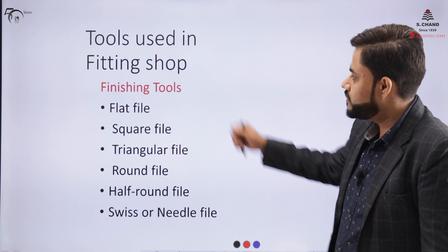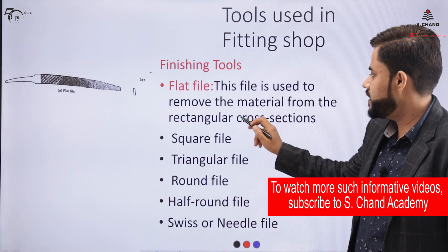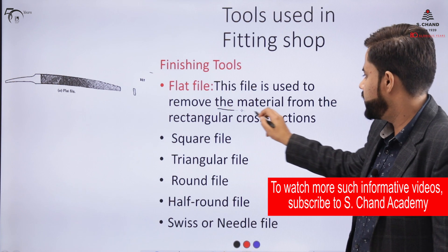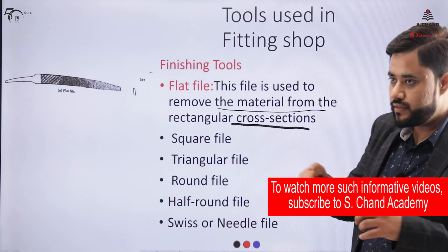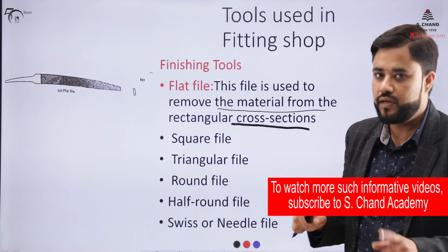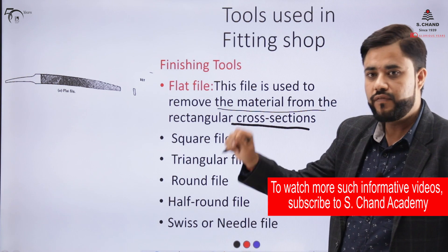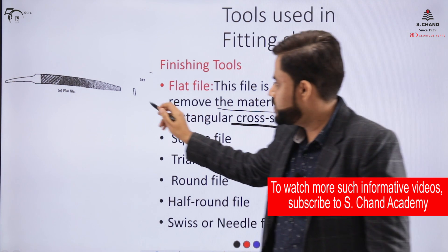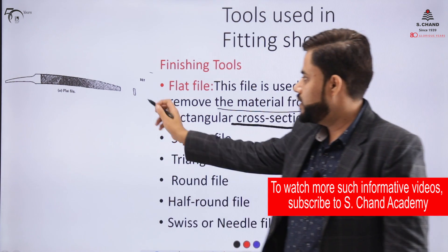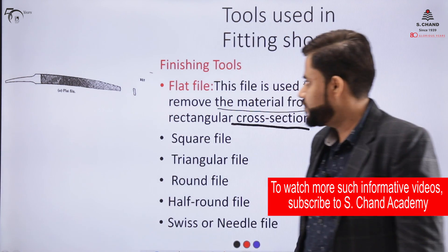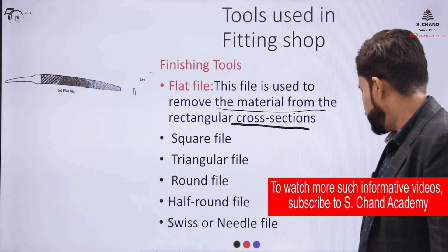The flat file, as the name suggests, is used to remove material from a rectangular cross-section surface. If the cross-section of the surface is rectangular, we use a flat file to finish it. This cross-section is indicated in the side view of the file, and this case is generally for rectangular cross-sections.